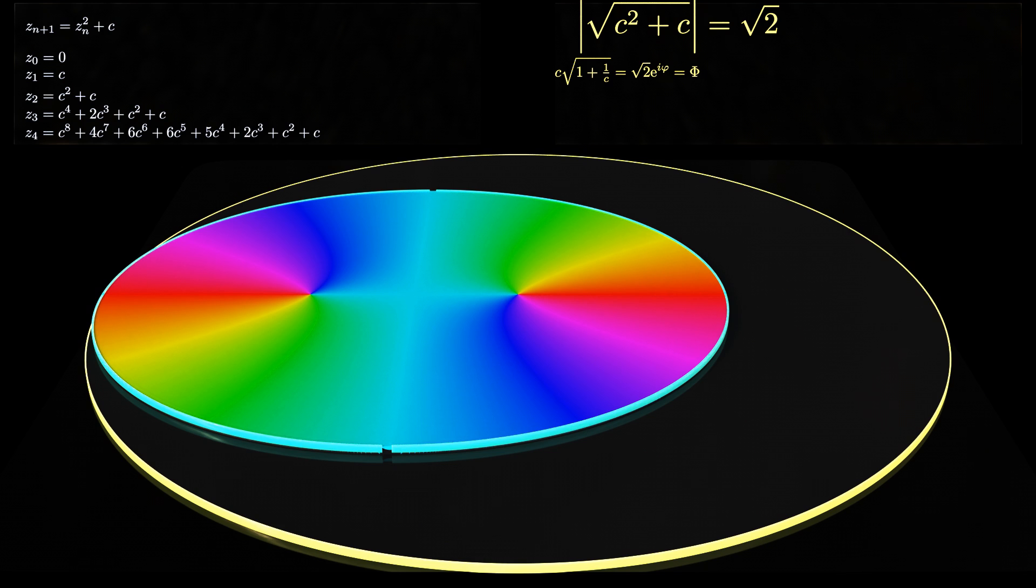In the limit of large c, the second term under the square root is small. Consequently, we can expand the square root into a Taylor series. Using this series, we calculate the expansion of the inverse function, which completes our method.